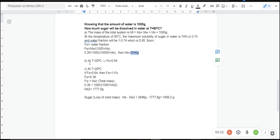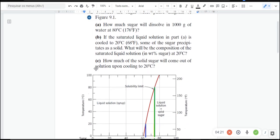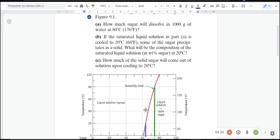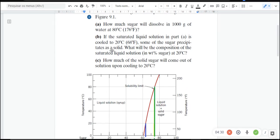And letter B is, if the saturated liquid solution in part A is cooled to 20 Celsius degrees, some of the sugar precipitates as a solid. That is because when we decrease the temperature, we decrease also the solubility of the sugar in the water. The question is,